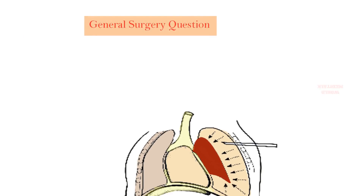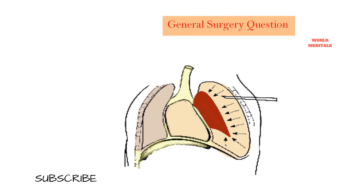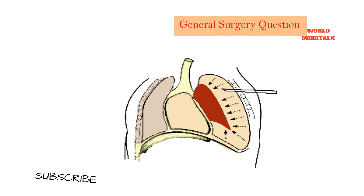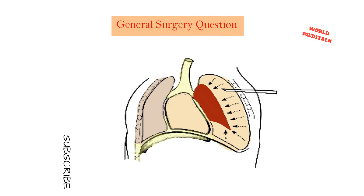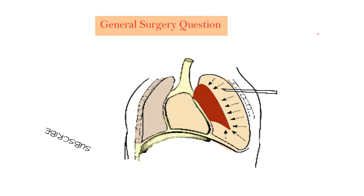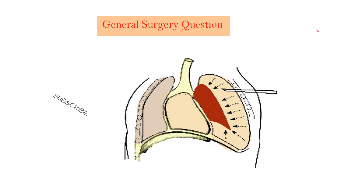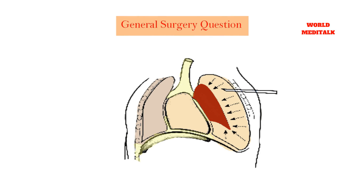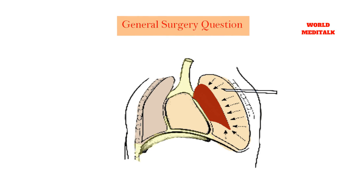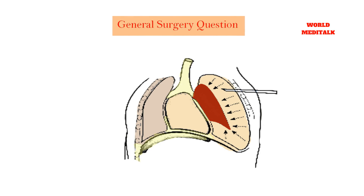Unlike spontaneous pneumothoraces, most would advocate chest tube drainage in the context of pneumothorax resulting from trauma. This is because of the risk of the lung laceration developing a tension pneumothorax. Once there is no further evidence of air leak, the chest drain may be removed and a chest x-ray performed to check there is no reaccumulation prior to discharge.